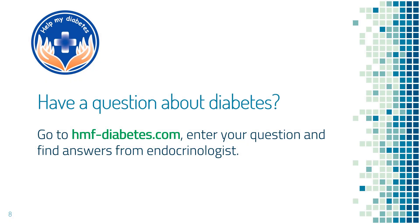If your blood sugar suddenly becomes too high, you can go to hmf-diabetes.com and search 'what to do if my blood sugar is very high' and find answers from an endocrinologist. You could also be more specific — for example, search 'my blood sugar is very high after taking steroids' to find more targeted answers.